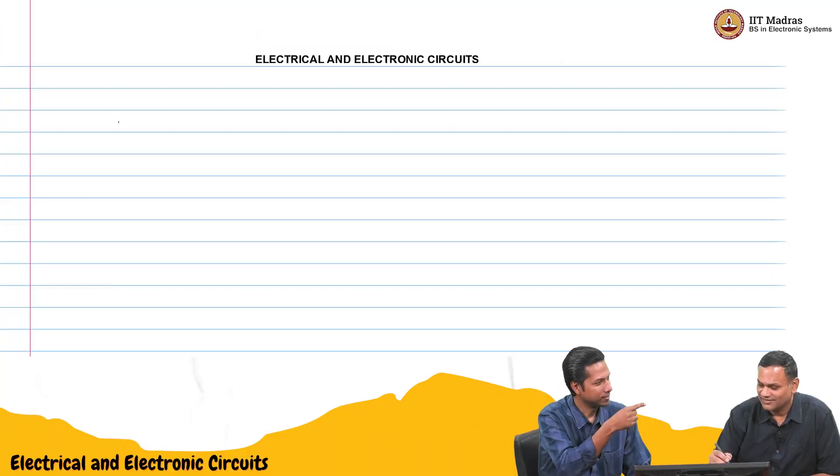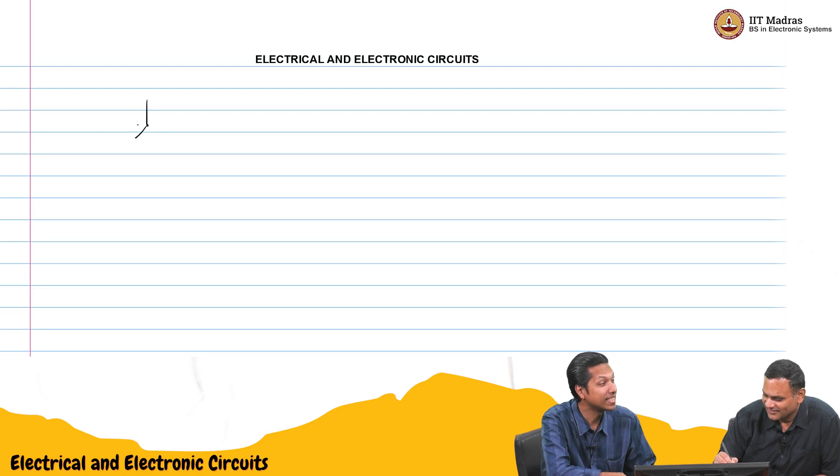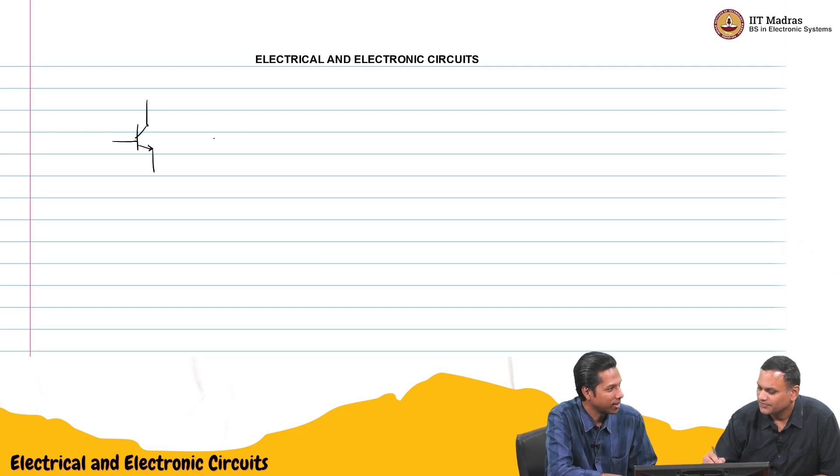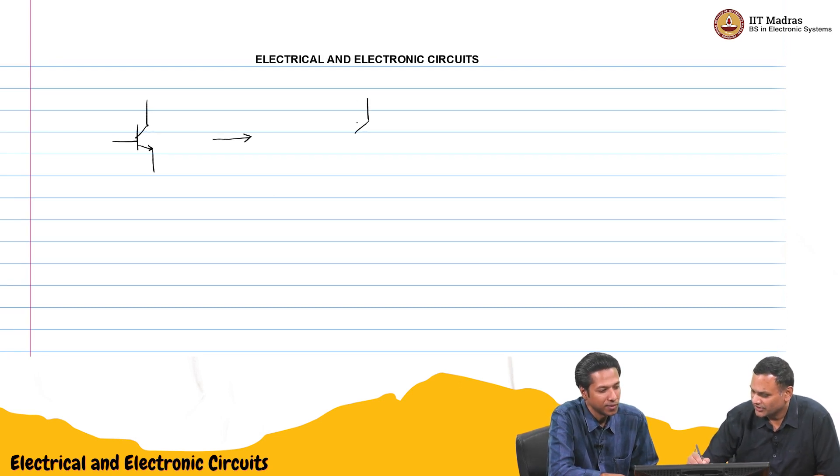You had mentioned about some Darlington pair. Correct, that is true. So where the base current is beta square times less. That is true. We took one single BJT and I think we put two of them together. In fact, you were saying that is some super transistor. Something like a super transistor, correct.